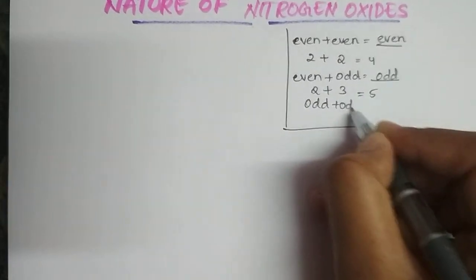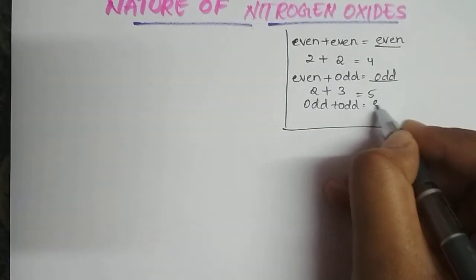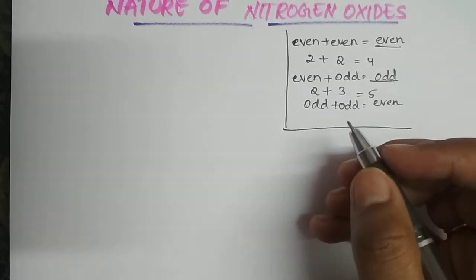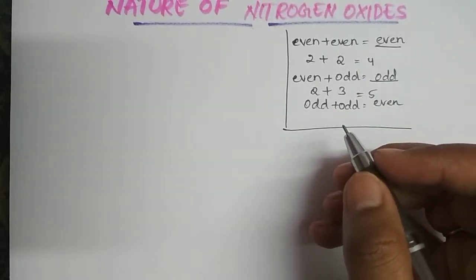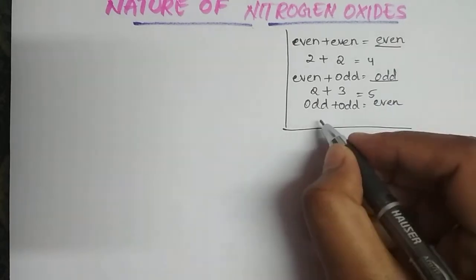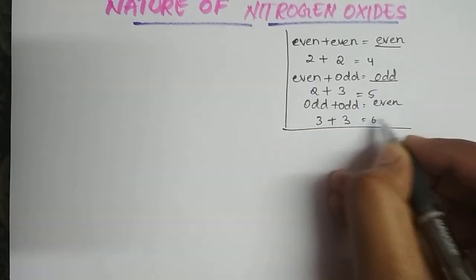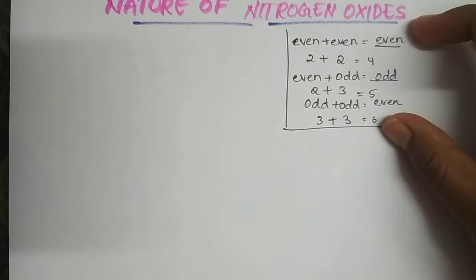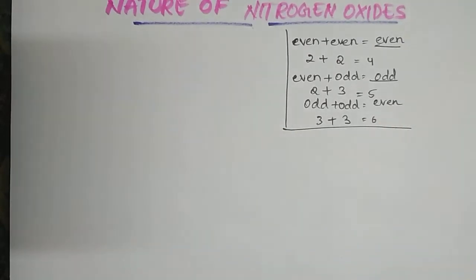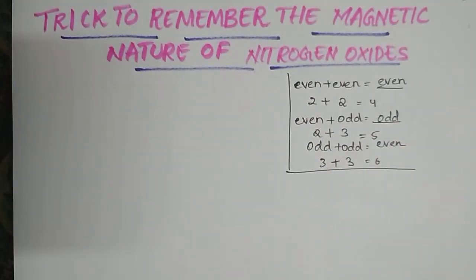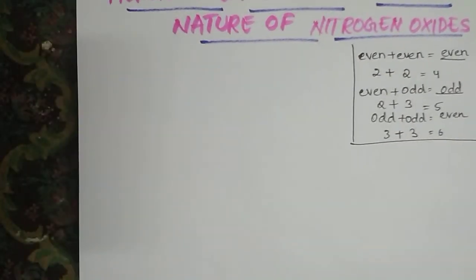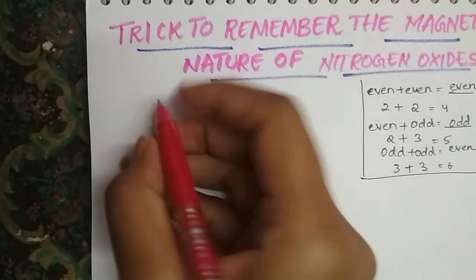Odd plus odd — let's take 3+3 — we get 6, which is even. So odd plus odd gives even. Based on this mathematical trick, I'm going to explain the magnetic nature of nitrogen oxides. First, let us know how many nitrogen oxides there are.